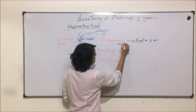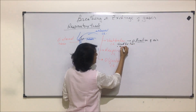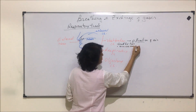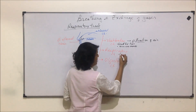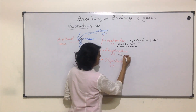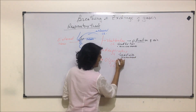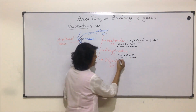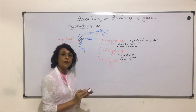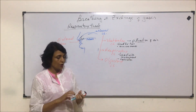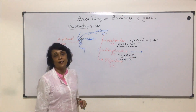Dust particles that enter stick to this mucus, so the vestibular chamber helps in filtration of air. It is lined by hair and mucus membrane. The respiratory chamber is also lined with mucus membrane and is highly vascular — meaning blood supply to this chamber is greater. The main function of the respiratory chamber is that it acts as an air conditioner.